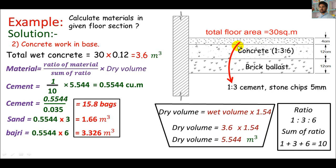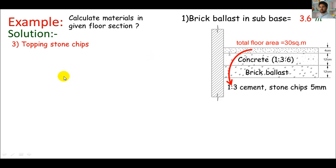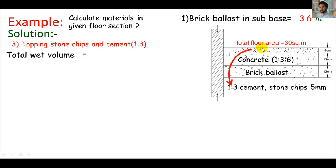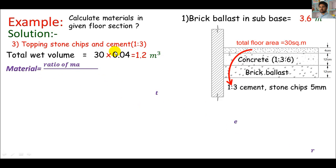My next approach is the topping with stone chips. It's a mix of cement and stone chips with a 1:3 ratio. I need the total volume of the topping first, because I need to calculate stone chips and cement separately. The volume is 30 square meters multiplied by the thickness of this topping, which is 4 centimeters — that's 0.04 meters. You must get 1.2 cubic meters as total wet volume.